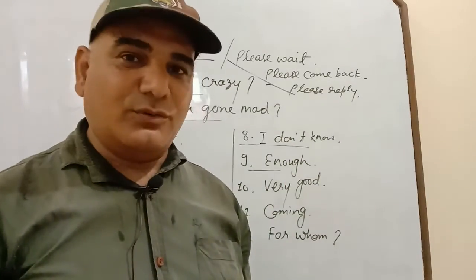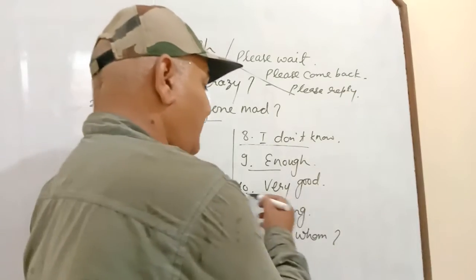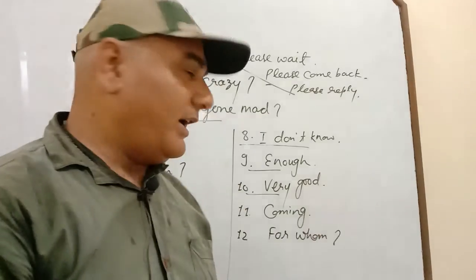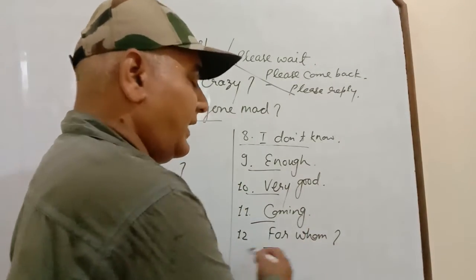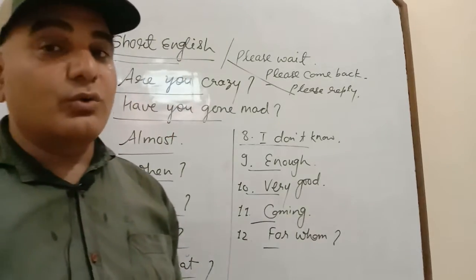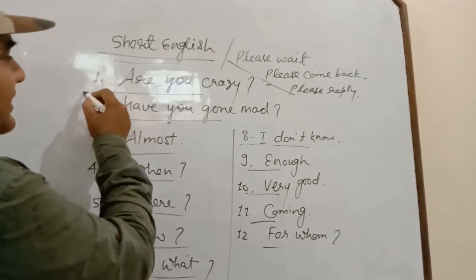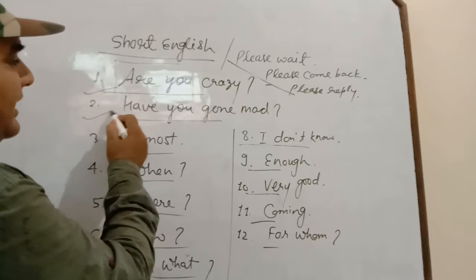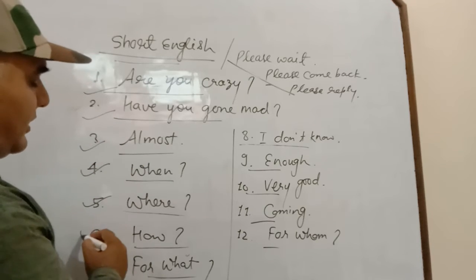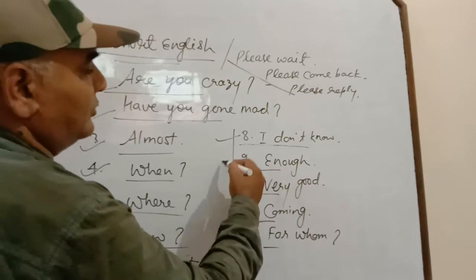'I don't know' — the best answer for everything. 'Enough' — it means the fight is over, the commenting is over, enough. 'Very good' — you have to come to the point. 'For whom' — to whom do you want to meet? These are short phrases used according to the situation.